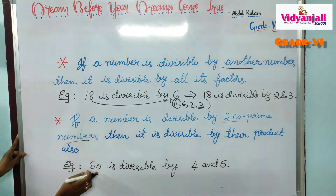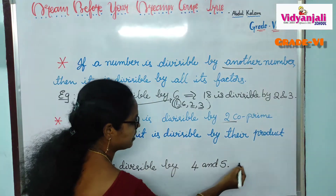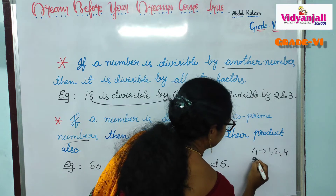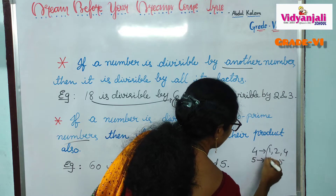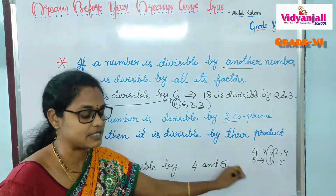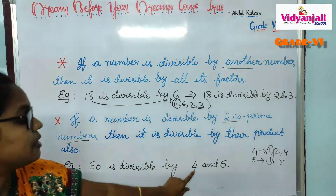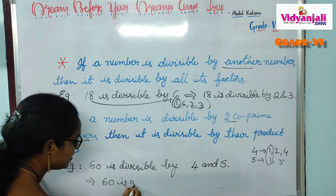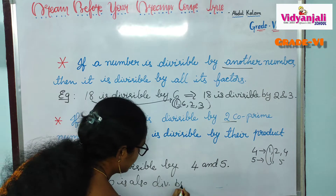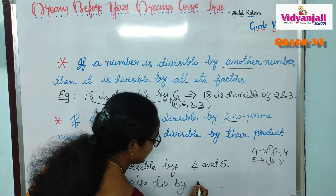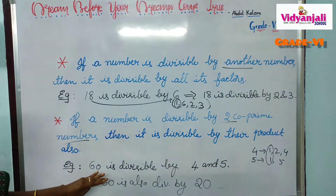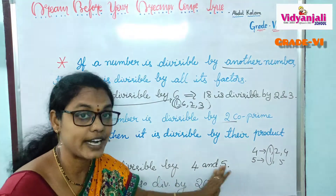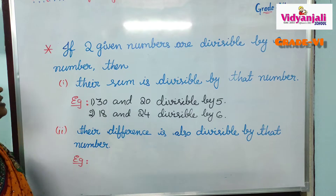For example, 60 is divisible by 4 and 5. 4 and 5 are co-primes because the factors of 4 are 1, 2, 4, and the factors of 5 are 1 and 5. Their only common factor is 1. So 4 and 5 are co-primes. As 60 is divisible by 4 and 5, we can say 60 is also divisible by their product — 4 times 5 is 20.